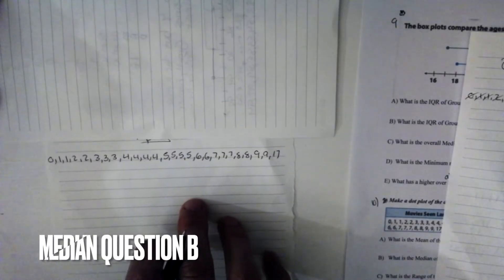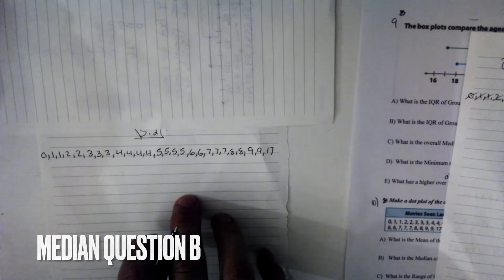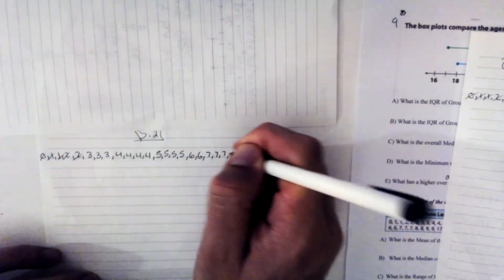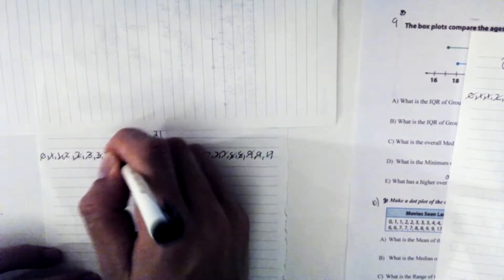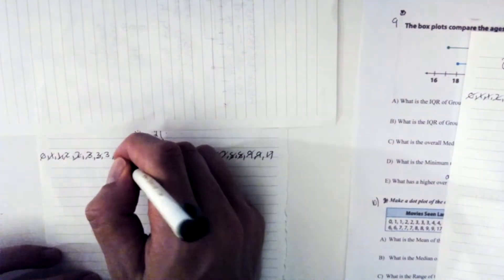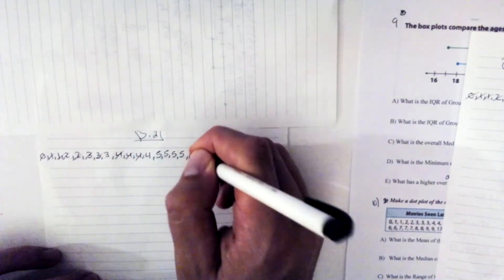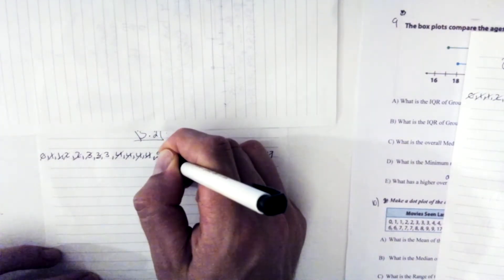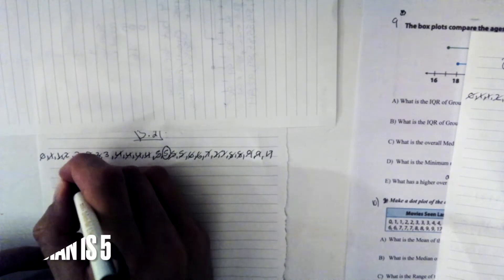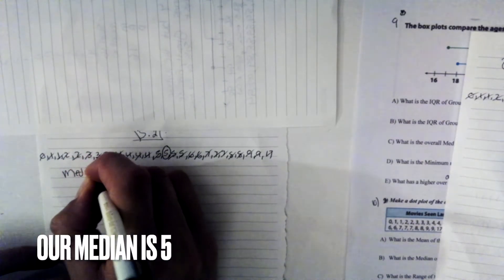So we've listed the numbers in order from least to greatest. And now we just need to go ahead and mark off each side until we get to the middle. So we're doing an even number each time. Until we get to that elusive middle number. Even numbers each time. We're getting closer. Running out of numbers to mark off, which is a good thing. And we're left with 5. So then our median is equal to 5.